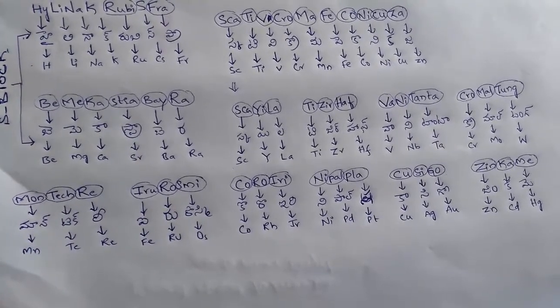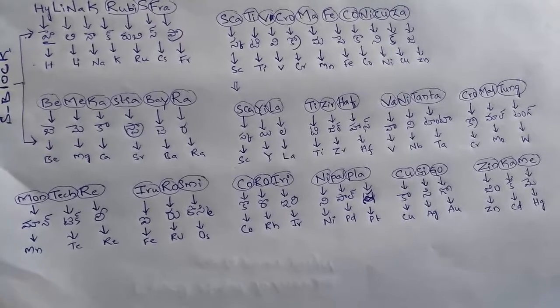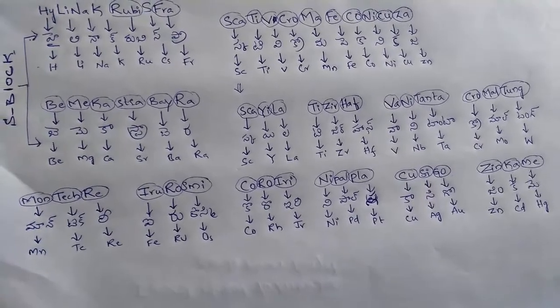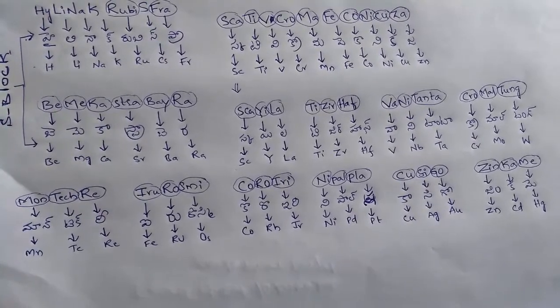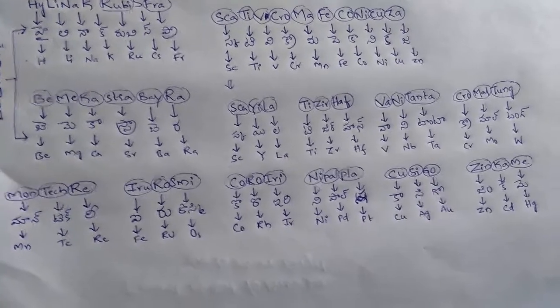Next, Cobalt group. Coroiri. Coroiri. Co means cobalt, Ro means rhodium, Ir means iridium.